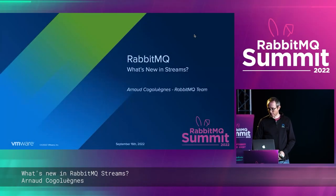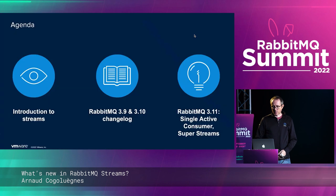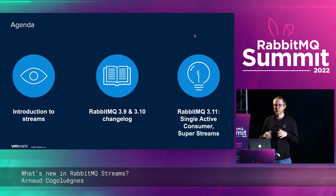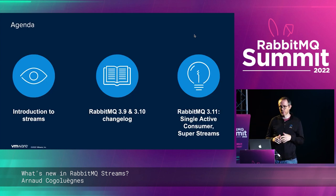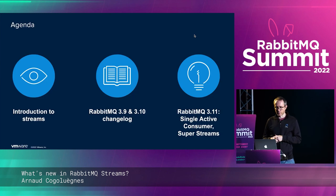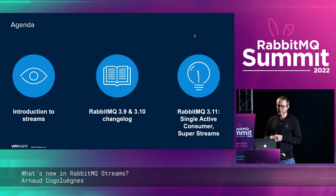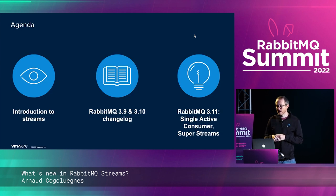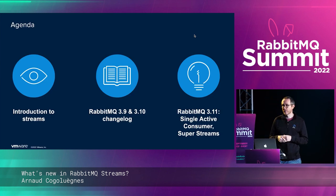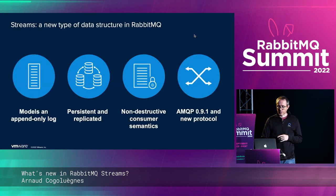Let's start with an update on streams. The agenda: we'll have a quick introduction to streams, since it's a pretty new feature, and give an overview. Then we'll see what we've been working on in the last couple of releases for RabbitMQ — the changes in 3.11 and 3.10 — and then we'll see the new stuff coming in RabbitMQ 3.11.